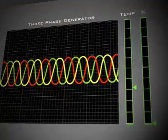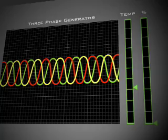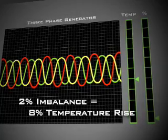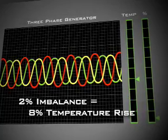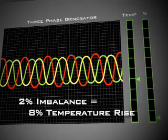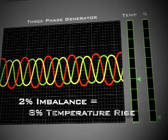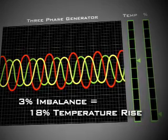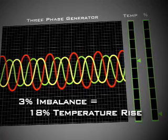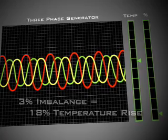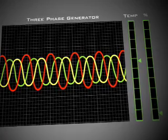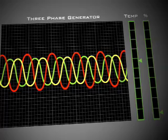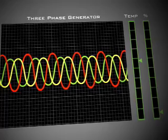Even small voltage imbalances can be harmful. A 2% imbalance can cause the temperature of the motor windings to increase 8%. A 3% imbalance can cause an 18% temperature rise. The greater the imbalance, the higher the motor winding temperature and the sooner the insulation will fail.